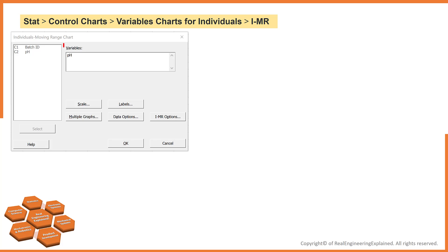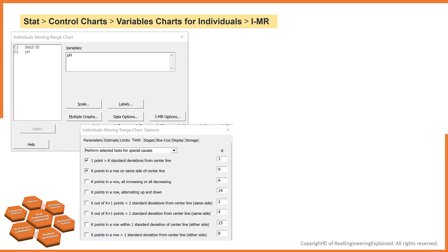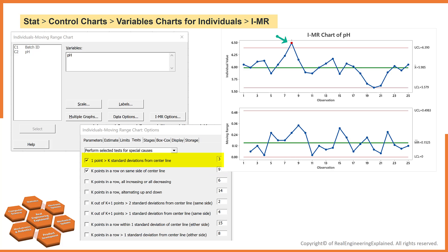In the variable section, select pH. Then click on IMR Options. Select 'one point more than K standard deviations from center line' — this is Test 1 — and Test 2, which is 'K points in a row on the same side of the center line.' As you can see, one observation failed Test 1 on the I chart because the observation is more than three standard deviations above the center line.